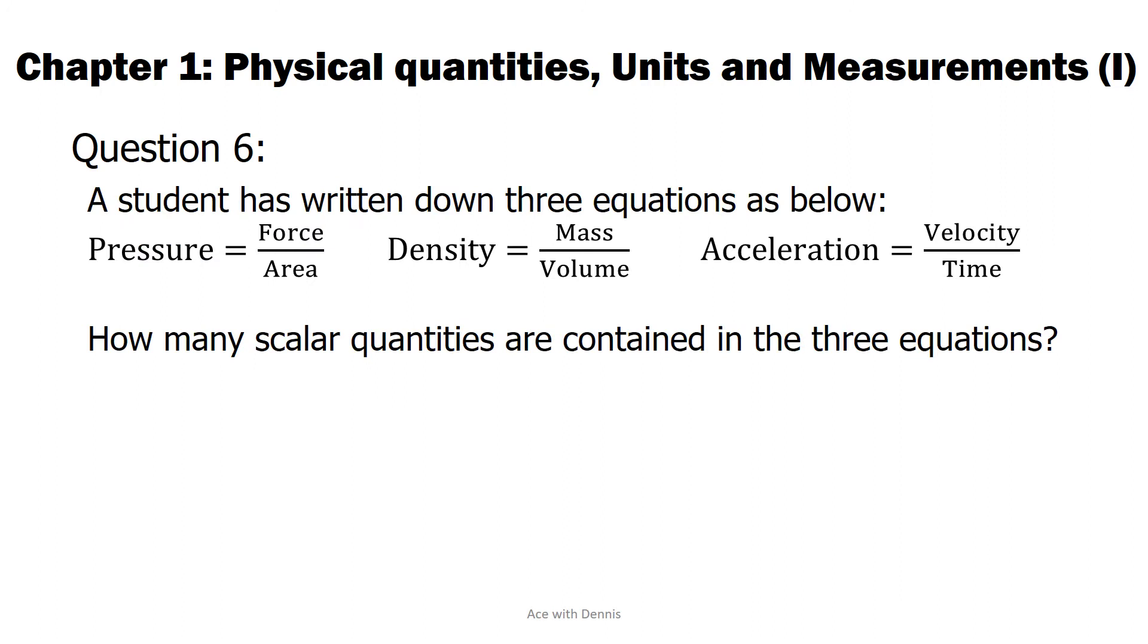Question 6: A student has written down three equations as below. Pressure equals force over area. Density equals mass over volume. Acceleration equals velocity over time. How many scalar quantities are contained in the three equations? A. 3. B. 4. C. 5. D. 6.